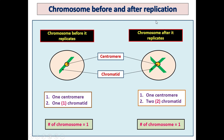After replication, the chromosome still has one centromere, but now it has two chromatids, which are identical to each other. Importantly, it is still one chromosome — one centromere, two chromatids, still one chromosome. Even after replication, once it has one centromere it is one chromosome. This is very important to understand before going into cell division.